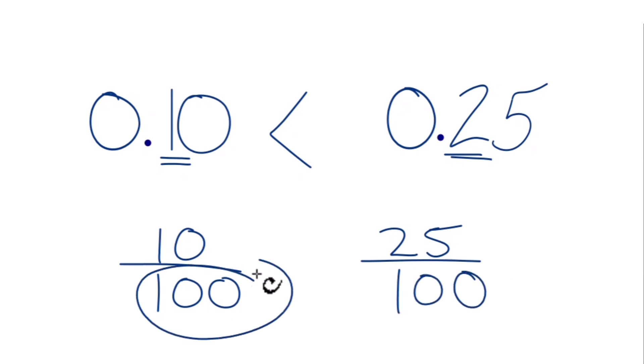With fractions, since we have the same denominator, we're just going to compare the numerators. And 25 is larger than 10, so 25 over 100 is larger than 10 over 100, as is 0.25 larger than 0.1, or if you call it 0.10.